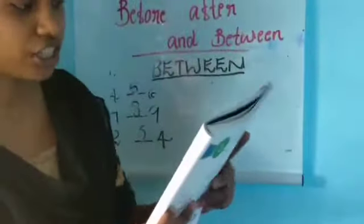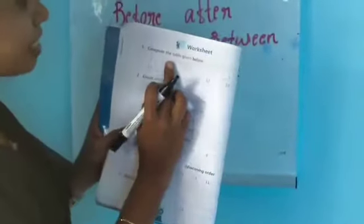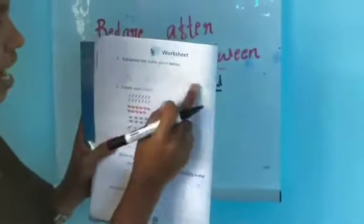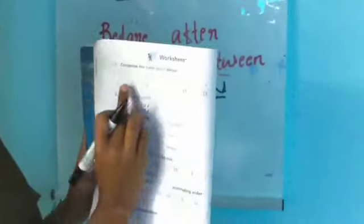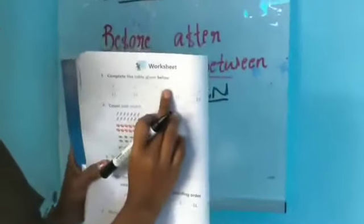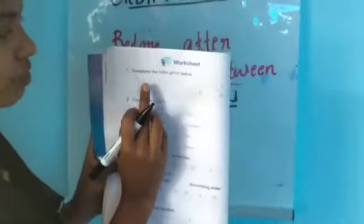You also have to write ordinal numbers. Then there is a worksheet: complete the table below — some numbers are given and some are hidden. You have one, then a missing number, then one, two, three, like that — fill them in.